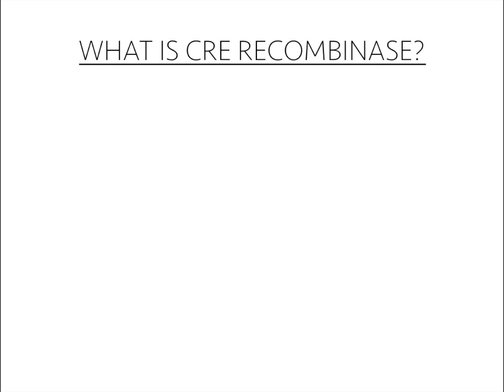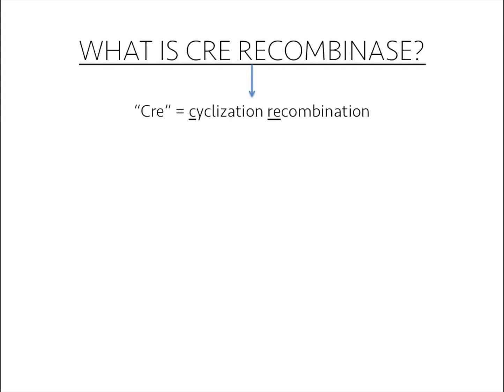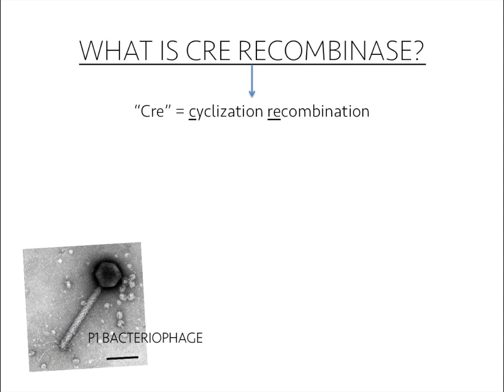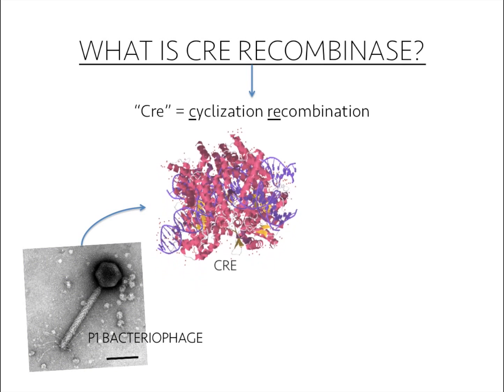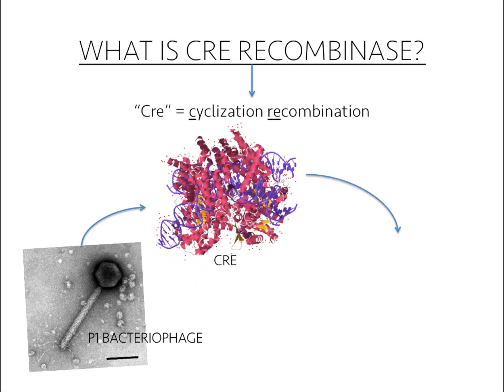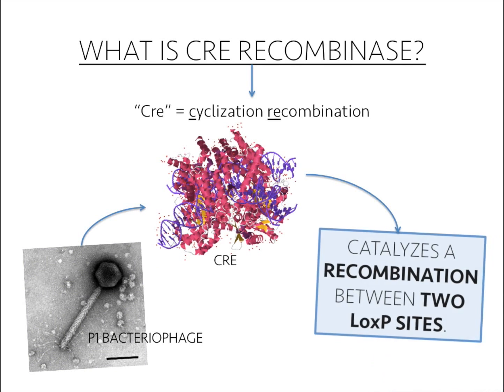Cre recombinase is short for cyclization recombination because its recombination mechanism works in a cyclic fashion. Cre is an enzyme derived from the P1 bacteriophage, and its function is to catalyze recombination between two LoxP sites.